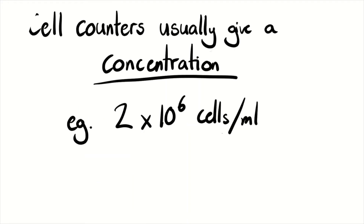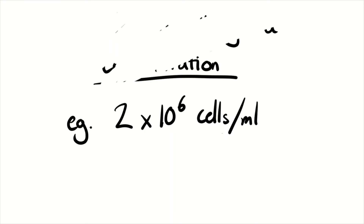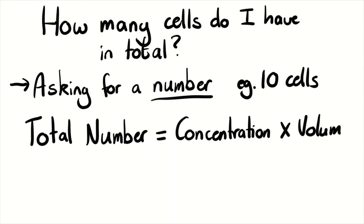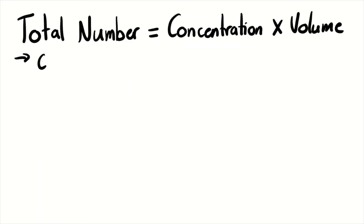Cell counters usually give you a concentration, such as 2 × 10⁶ cells per mil. One of the common things you will have to calculate is how many cells do you have in total — that is asking for a number, for example 10 cells.